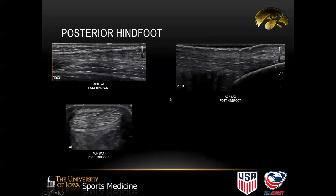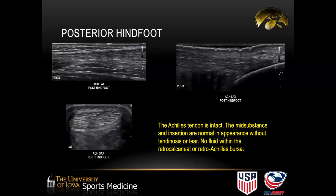I'll flip around to the posterior hindfoot for a quick evaluation of the Achilles tendon. In long axis we see the Achilles tendon with the calcaneus on the right and proximal to the left — all looks normal. We can see the Achilles mid-substance in long axis and in short axis with that normal hyperechoic fibrillar broom-end appearance. For this patient, the Achilles tendon is intact with normal mid-substance and insertion. There's no fluid within either the retrocalcaneal or retro-Achilles bursa.